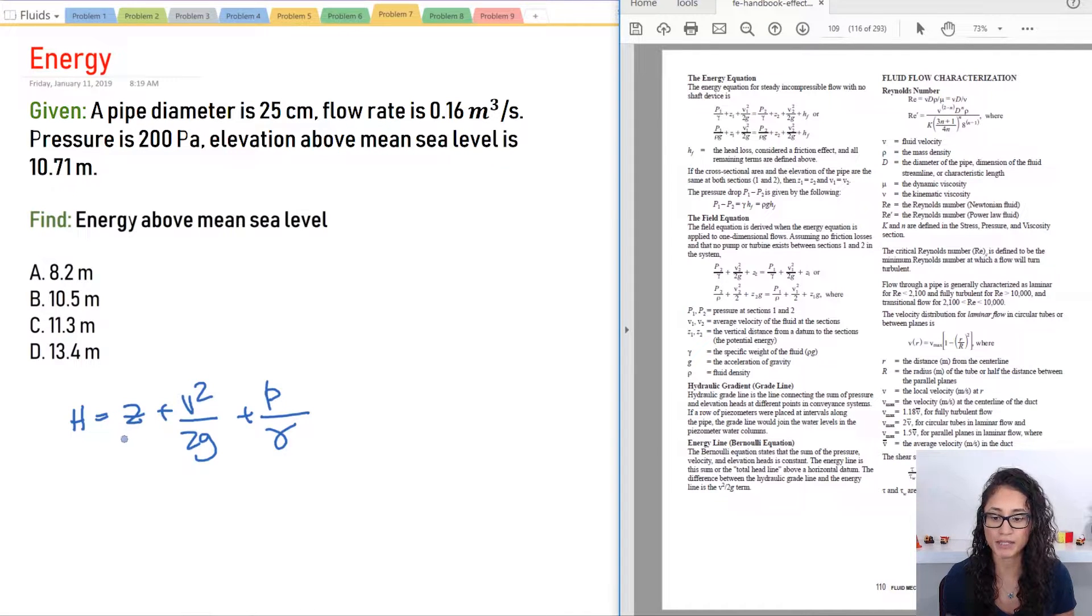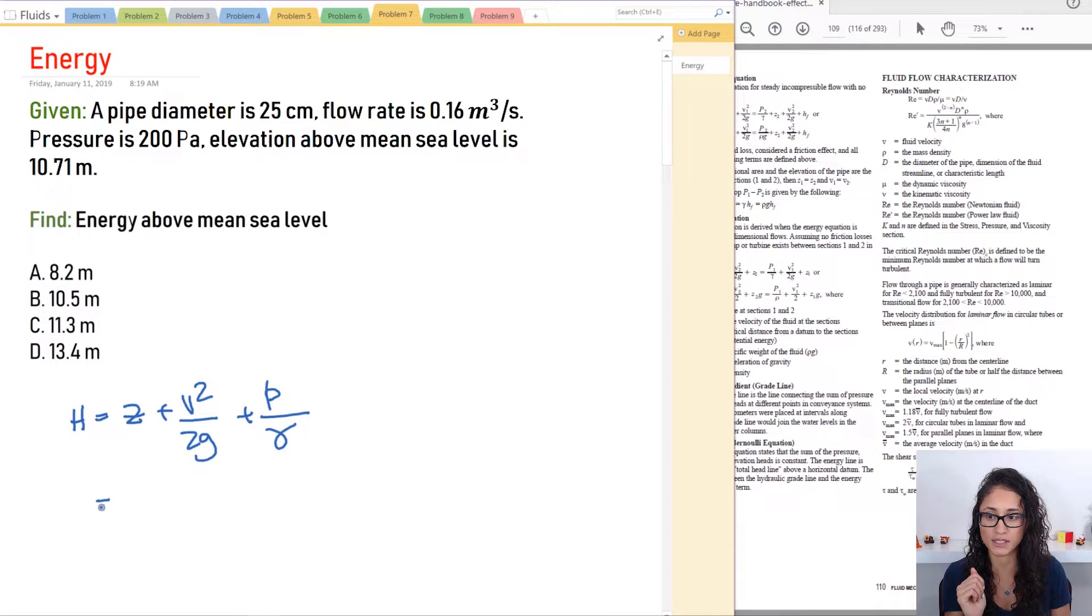So Z represents the potential head, V squared over 2G represents velocity head, P over gamma represents the pressure head and head usually represents energy. So just keep this in mind. So now Z is equal to 10.71.